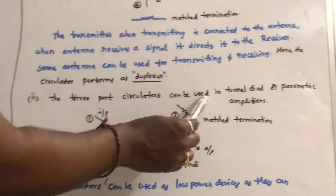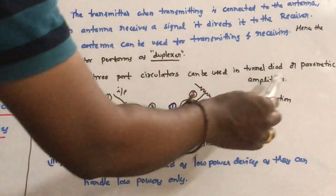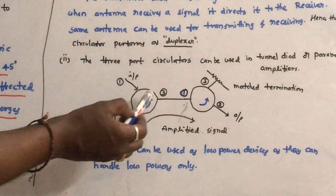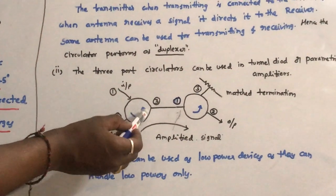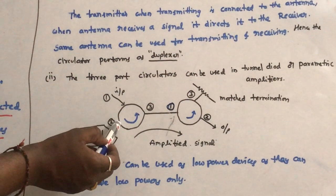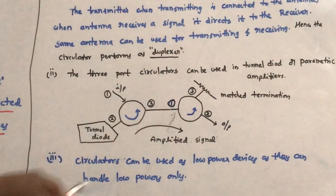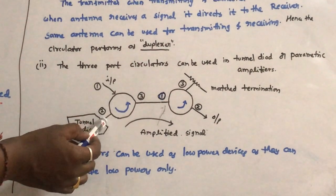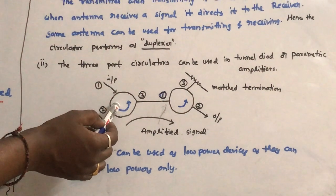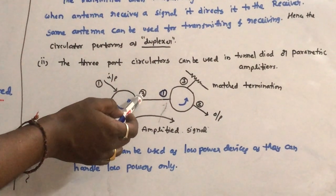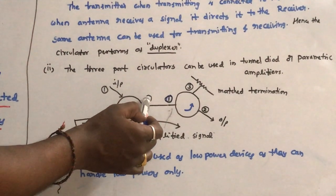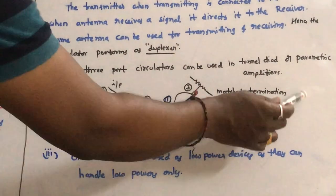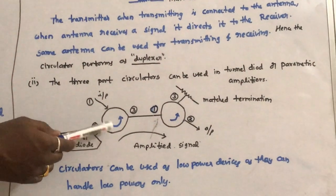The three-port circulator can be used in tunnel diode or parametric amplifiers. In this anti-clockwise three-port circulator, port 1 is connected to port 2 and port 2 is connected to port 3. The input is given to port 1, which is fed to the tunnel diode. The tunnel diode amplifies the signal, and this amplified signal is given to port 3 of a second three-port circulator, where it enters at port 1 and comes out as output at port 2. Port 3 is provided with matched termination.